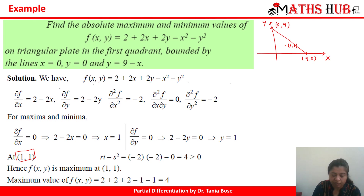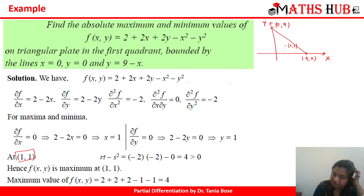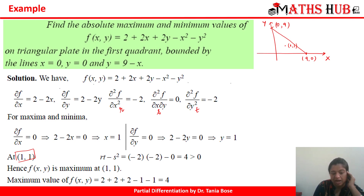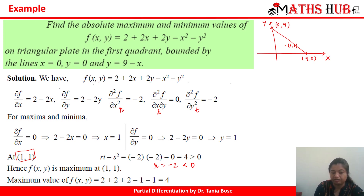We check rt - s²: ∂²f/∂x² = -2 (this is r), ∂²f/∂x∂y = 0 (this is s), and ∂²f/∂y² = -2 (this is t). So rt - s² = 4, which is greater than 0. Since r = -2 is less than 0, the function has a maximum value at (1, 1). Substituting x = 1 and y = 1 into the function gives the maximum value.